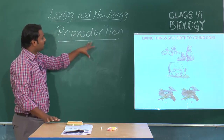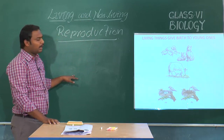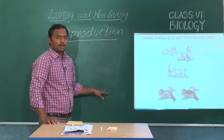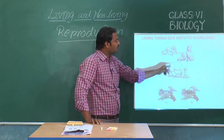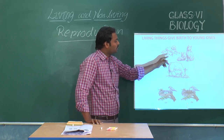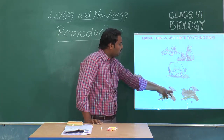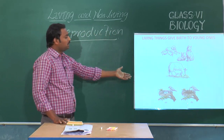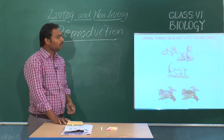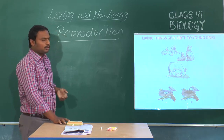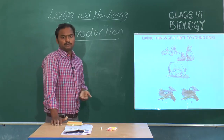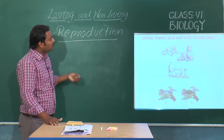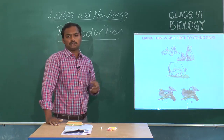Reproduction is one of the important characteristic features. During this process, all living forms produce their young ones. A dog produces puppies, a cow produces calves, a hen produces chicks — all living beings produce their young ones. Producing young ones similar to themselves is nothing but reproduction.